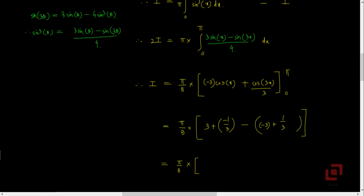Now substituting x as 0: cos(0) is 1, so the first term gives minus 3; cos(0) is 1, so the second term gives 1 upon 3. The first bracket is 3 minus 1/3 which is 8/3. The second bracket is minus 3 plus 1/3 which is minus 8/3. So we are getting pi by 8 into (8/3 minus minus 8/3) which is pi by 8 into 16/3, equal to 2pi by 3.